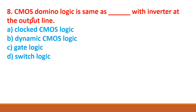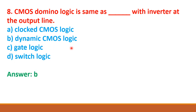Next question: CMOS domino logic is same as dash with inverter at the output line — option A: clocked CMOS logic, option B: dynamic CMOS logic, option C: gate logic, option D: switch logic. The correct answer is option B: dynamic CMOS logic. So CMOS domino logic is the same as dynamic CMOS logic with an inverter at the output line.